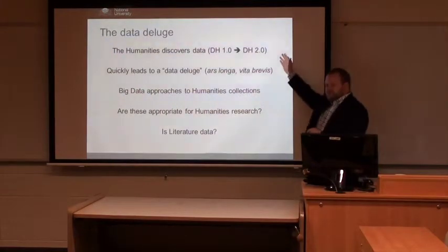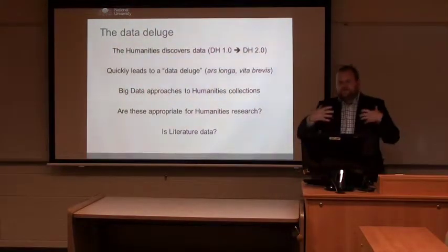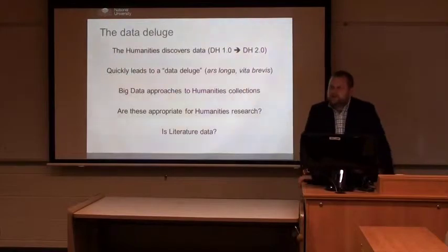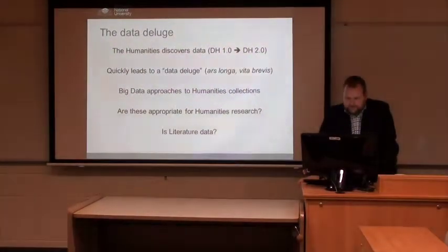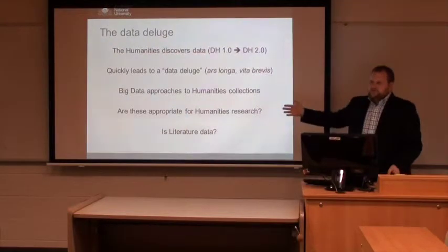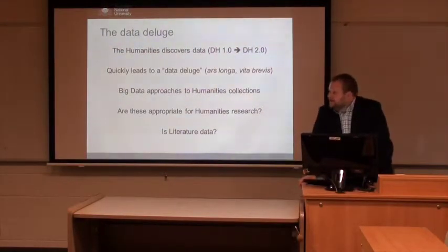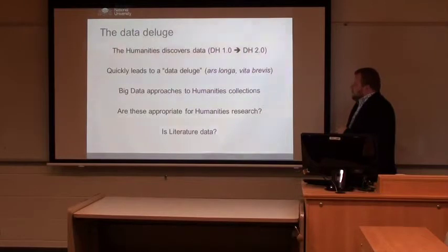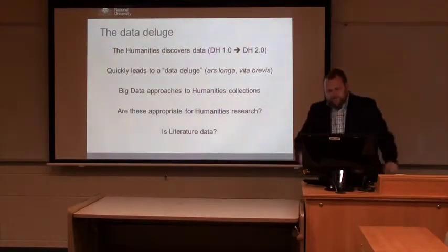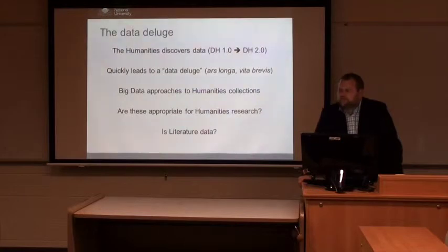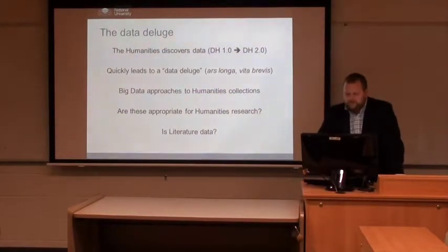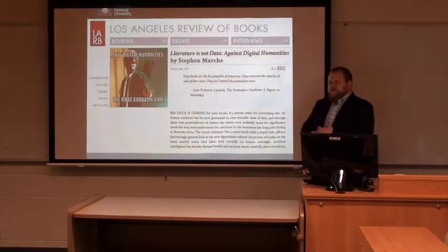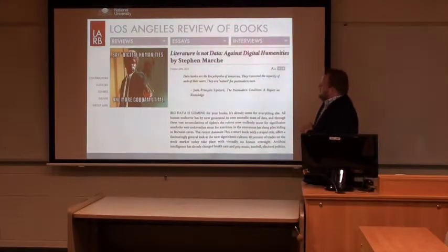What I'd call Digital Humanities 2.0, maybe — moving from the specificity of text and coding, towards these large mass collections digitized more or less by entities other than universities, such as Google Books. This leads to a data deluge, because it's not humanities unless we have a crisis. My idea is that there now are a prevalence of big data approaches to humanities collections. Are these appropriate for humanities research and literary research in particular? Is literature, or is literature data?